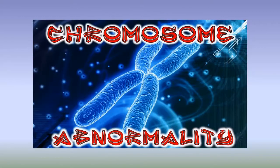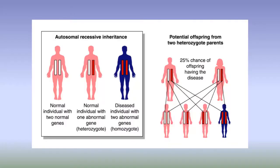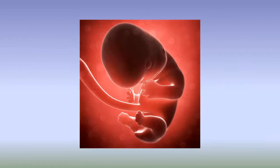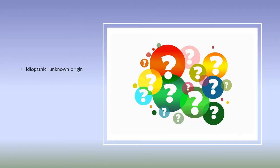Dandy-Walker Syndrome is believed to be the result of a multifactorial gene mutation. The presence of chromosomal anomalies could also be a risk. Congenital infections — called teratogens — could also be a cause. Dandy-Walker Syndrome develops in the fifth to sixth week after conception, and the cause could also be idiopathic and unknown in origin.